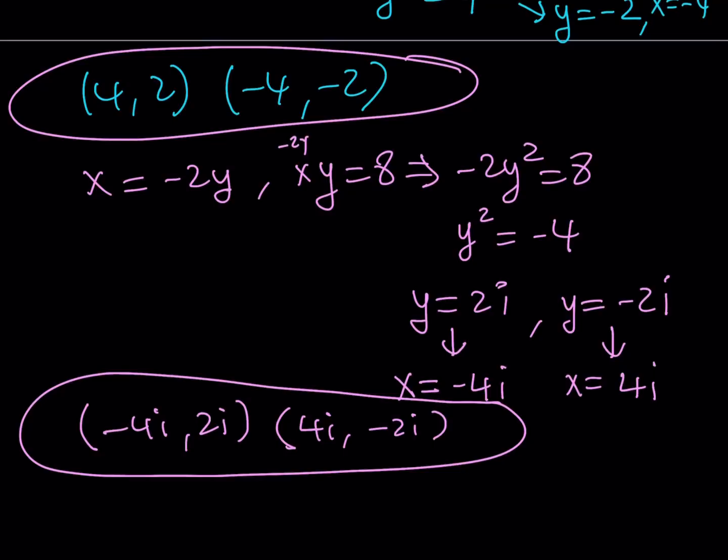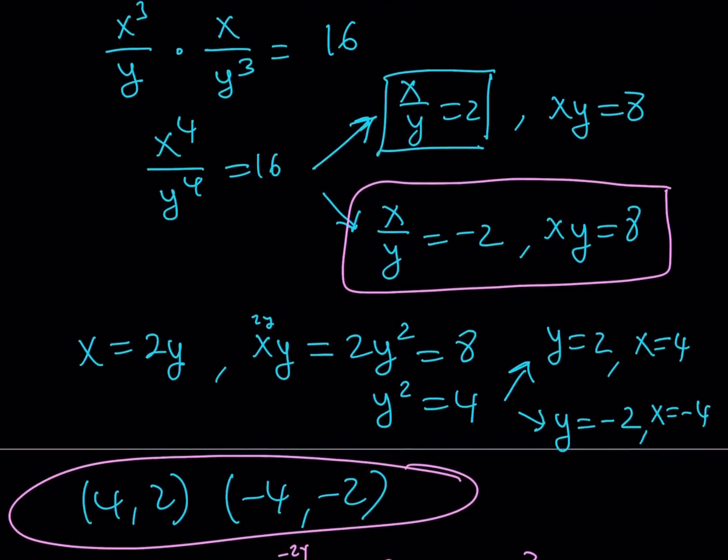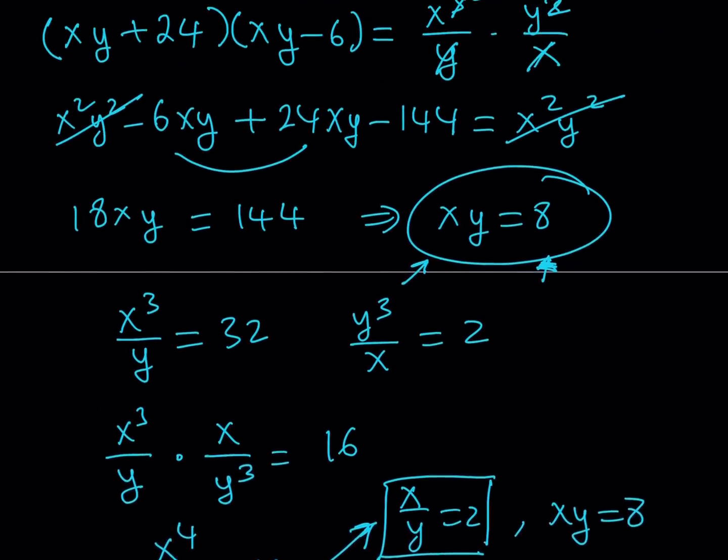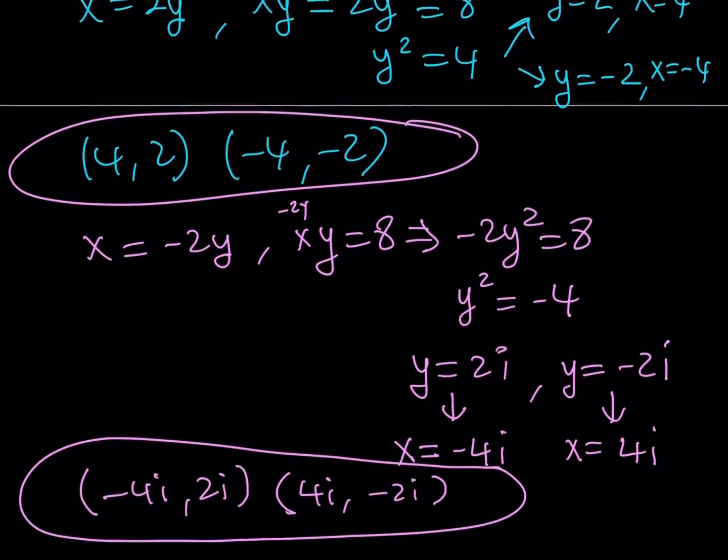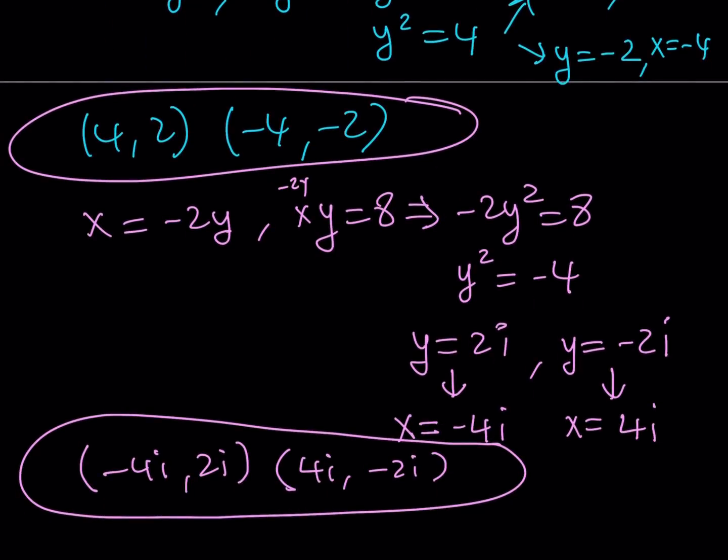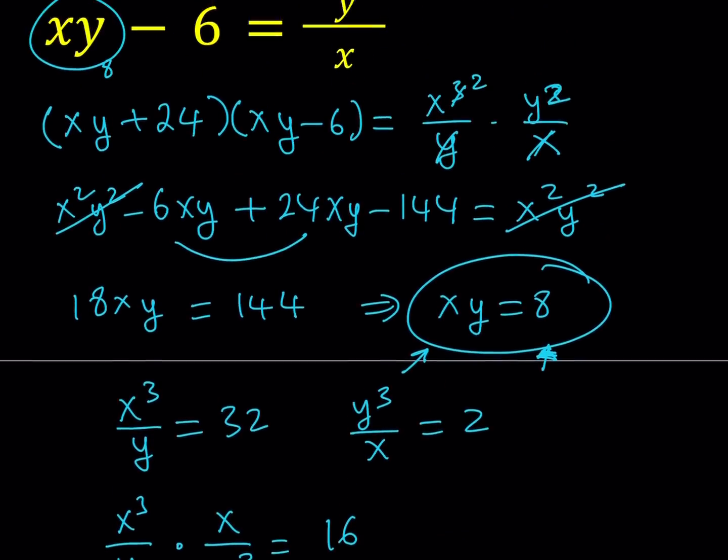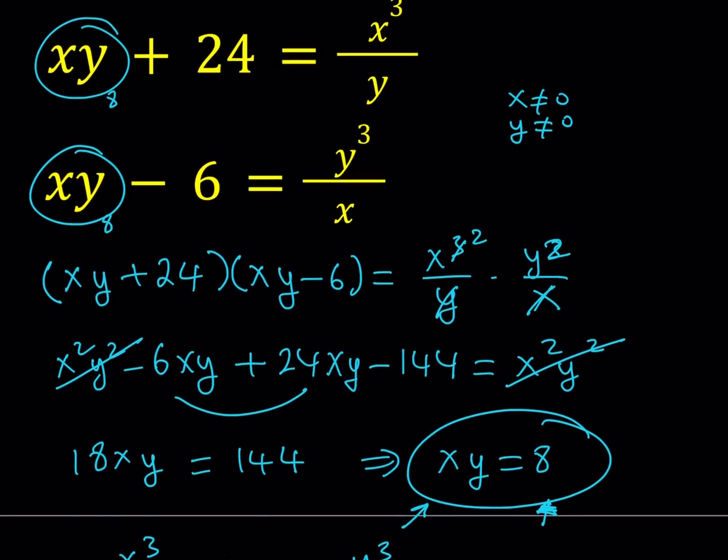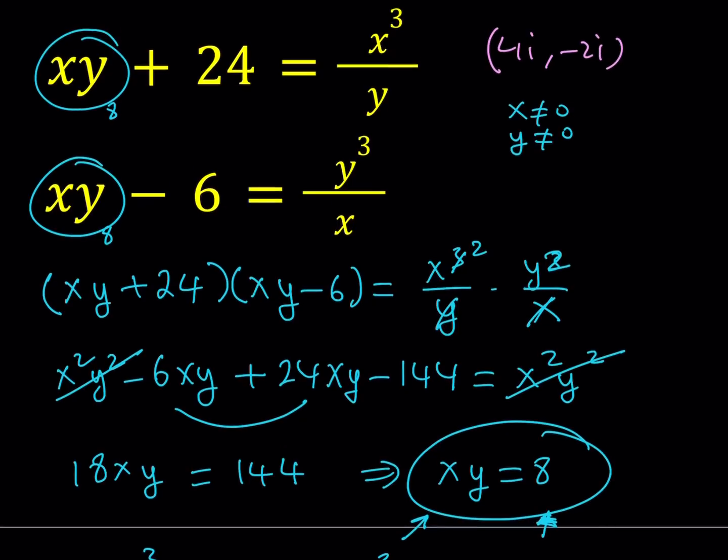So we got these real solutions here and we got these complex solutions that are non-real. Now here's one thing you may want to think about: is this going to satisfy the original problem? For example, if I take 4i, -2i, let's go ahead and test it out. If you test it in one of the original equations, x times y is going to be negative 8i squared, which is positive 8.